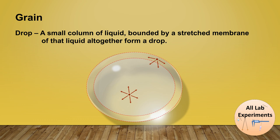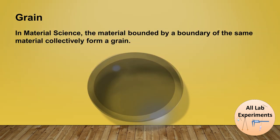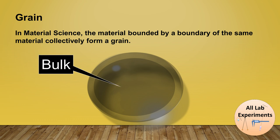On the similar basis, let us discuss about the definition of a grain in material science. The material bounded by a boundary of the same material, collectively they form a grain. In this, the inner part is known as the bulk of the grain and the outer boundary is called as the grain boundary.